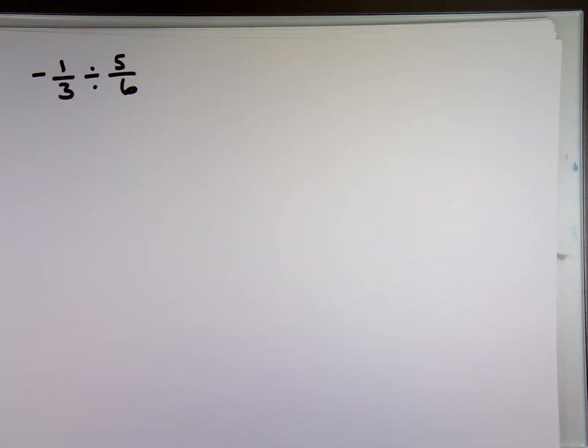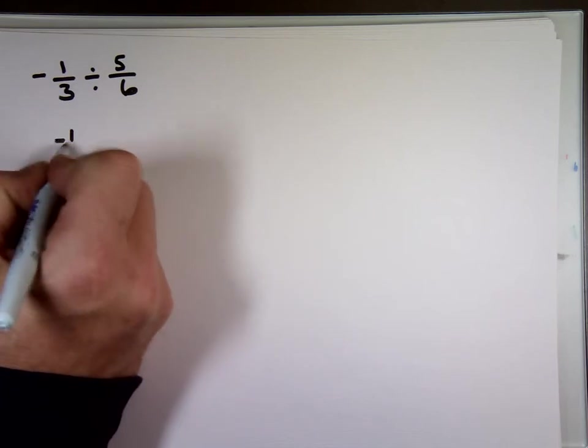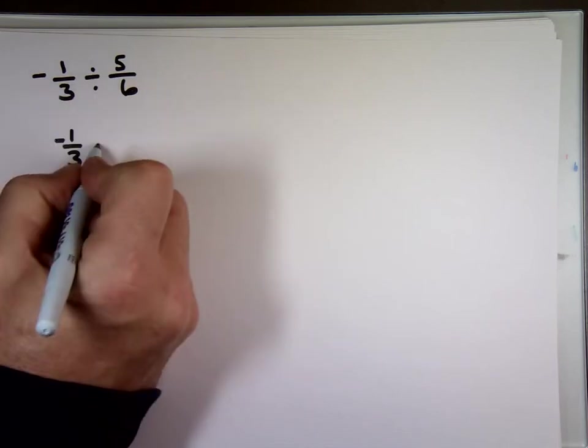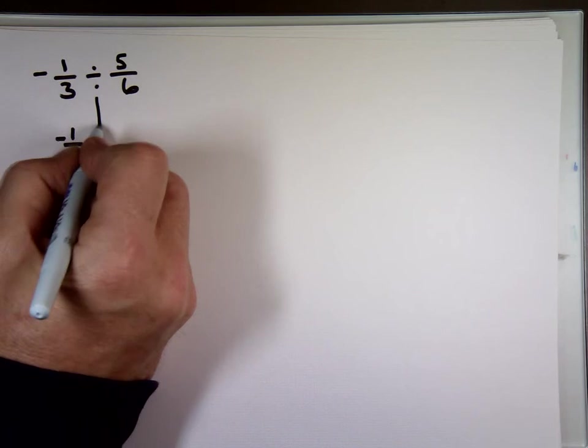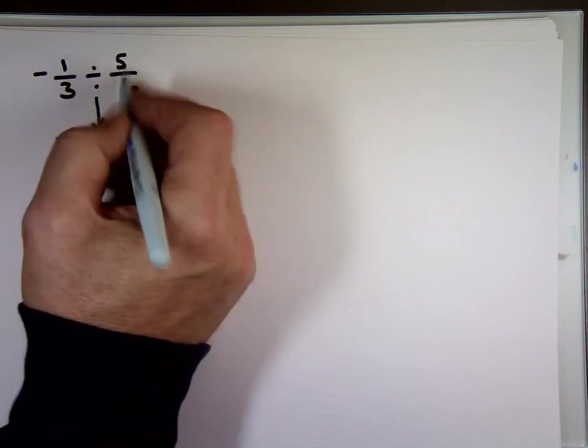What was the rule for division? What is it? It's like a one reciprocal. Very good. Change the division to multiplications. And take the reciprocal of that. Reciprocal means flip it.